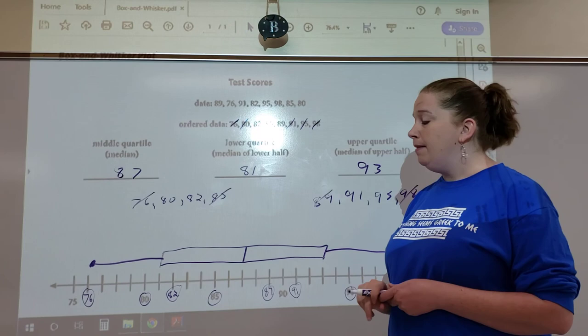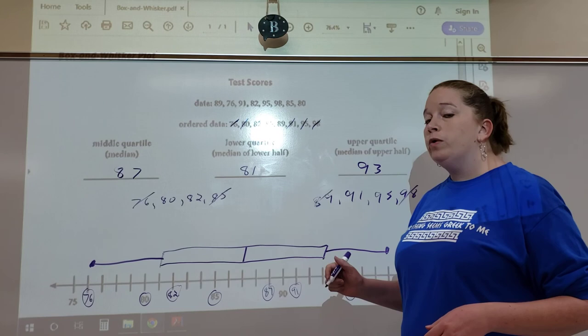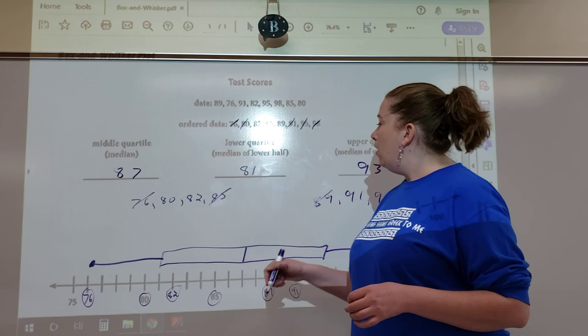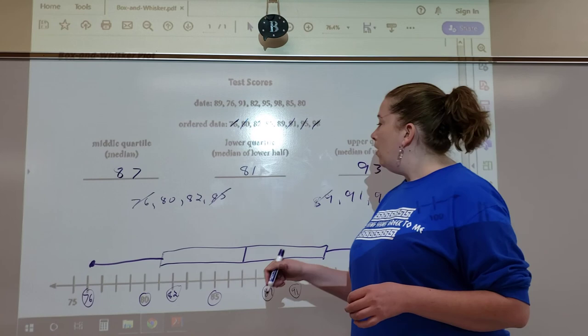This is our box and whiskers. The middle quartile is the median of all our data. The lower quartile is the median of all the data lower than the median. The upper quartile is the median of the data higher than the quartile. Draw the box around it, draw your whiskers, and that is it.